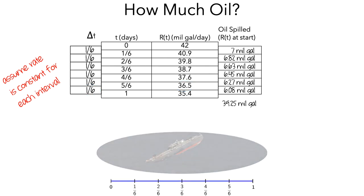For each of these computations, we assumed that the rate at the beginning of each interval stayed constant for the entire interval. We call this method a left approximation of the total amount of spilled oil, because we were using the rate that corresponded to the left endpoint of each interval.